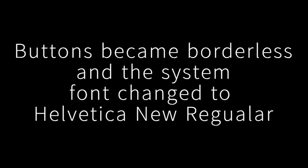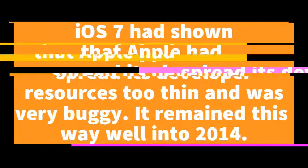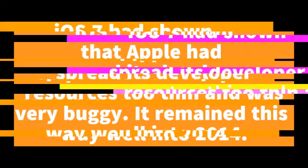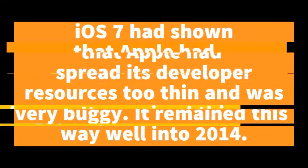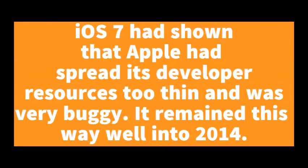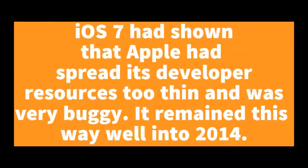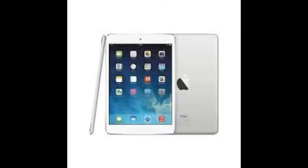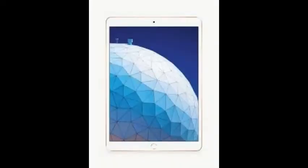Buttons became borderless and the system font was changed to Helvetica Neue regular for a cleaner look. That said, iOS 7 had problems that indicated Apple had spread its developer resources too thin. It was buggy on its initial release and remained buggy well into 2014. Phones for iOS 7 were the Apple iPad mini 2, the iPad Air, and the Apple iPhone 5s.